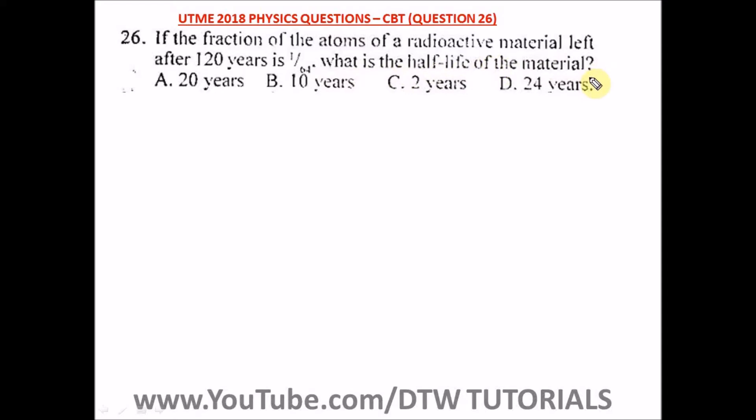Remember the formula for half-life: half-life is equal to the total time, which is 120 years, over the stages of radioactive decay. We've been told that the fraction of atoms of radioactive material left after 120 years is 1 over 64, so we have to find the stages before it got to 1 over 64.